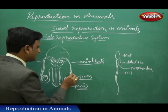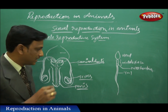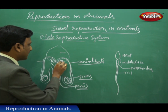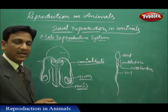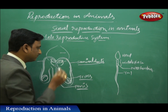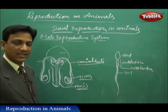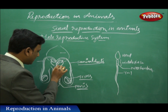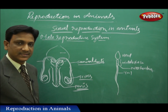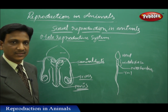On both sides, each testis is connected to a seminal duct. The male gametes are called sperm cells. The sperm cells are formed in the testes and pass through the seminal duct. There are other glands which add a jelly-like fluid to provide energy to the sperm cells for travel. The sperm mixed with these other fluids becomes semen, which passes out through the penis.